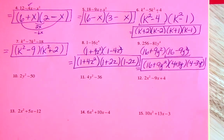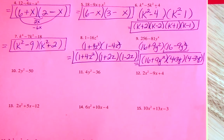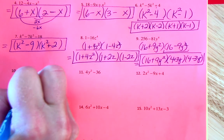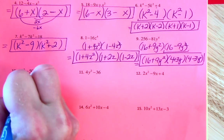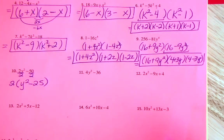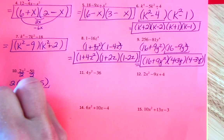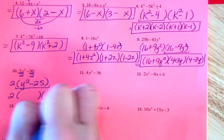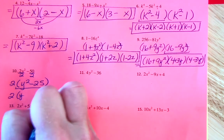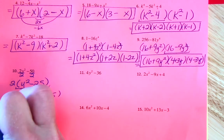Next row — is there a GCF? Finally, yes. Number 10 has a GCF of 2. When we divide out the 2, we'll have y² minus 25, and that's DOTS, so it has to be factored again. It's going to be 2(y + 5)(y − 5).